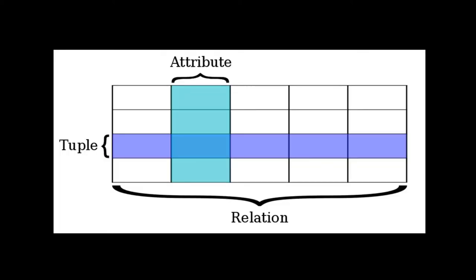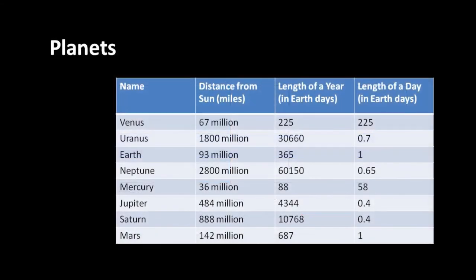To start things off, we'll look at the relational model itself. What's called a relation is composed of tuples and attributes - in common parlance, we call relations tables, and tables are made up of columns and rows. Here is an example relation, a planets table. It has four columns: the name, the distance from the sun in miles, the length of a year in Earth days, and the length of that planet's day expressed in Earth days.